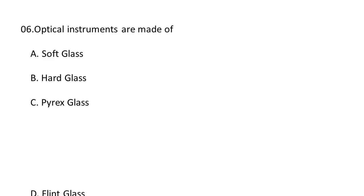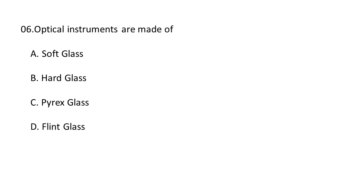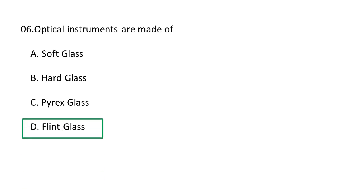Next question: Optical instruments are made of A. soft glass, B. hard glass, C. pyrex glass, D. flint glass. Optical instruments are made of flint glass. D is the correct option. Flint glass is used to make optical instruments like lenses, prisms, and other imaging devices. Flint glass is a lead-containing glass with a high refractive index, and it is made from quartz, a hard crystalline mineral composed of silica.